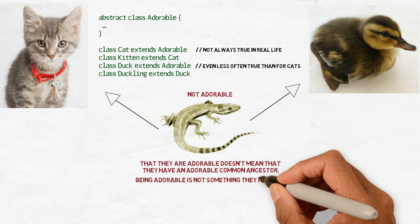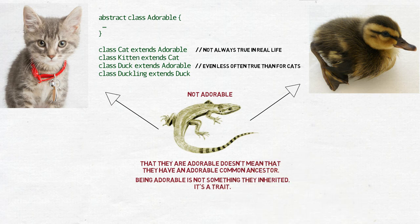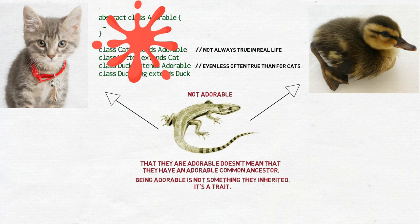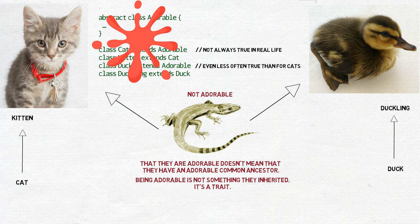Being adorable is then more like something they can do, affect people with their cuteness, than something they are. More likely than having a class kitten extending something adorable, we will have class kitten extending cat with the trait adorable. And similarly, we will have the class duckling extending duck with the trait adorable.